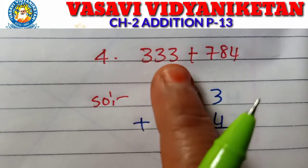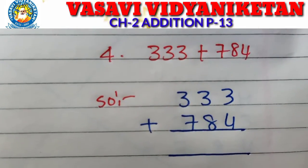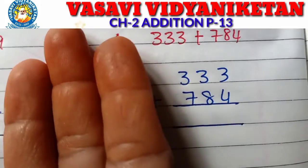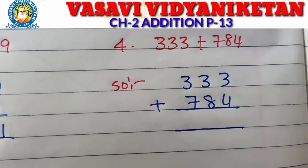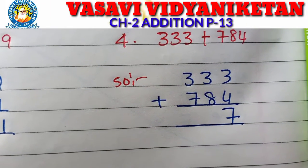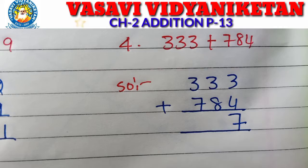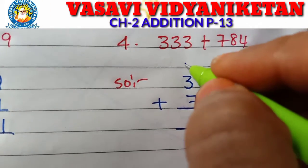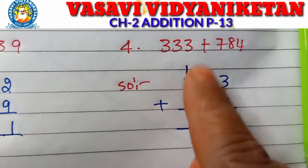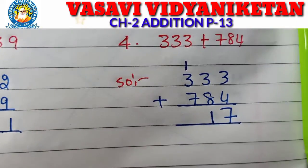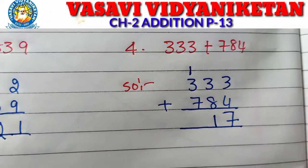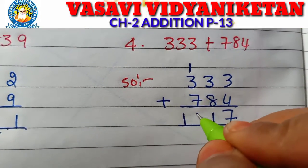Fourth problem: 333 plus 784. Write in columns and add. Three plus four — take three fingers, four after: five, six, seven. How much? Seven. Next: three plus eight — take three fingers, eight after: nine, ten, eleven. Eleven. So one is in the hundreds place, one remains in the tens place. Next: one plus three equals four. Take four fingers, seven after: eight, nine, ten, eleven. How much? Eleven. So the answer is 1117.